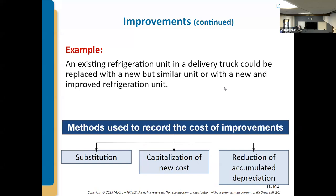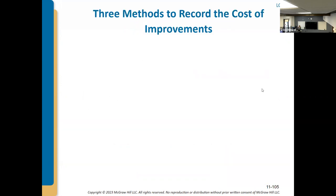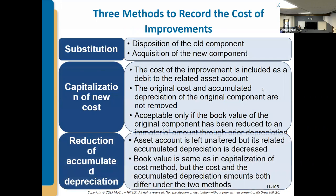When looking at the cost of improvements, you can use substitution — dispose of the old unit and capitalize the new one. If you're scrapping an old unit, you remove both the asset and accumulated depreciation off the books and recognize a loss if not fully depreciated. If selling, you could have either a gain or a loss. Capitalization of a new cost would be recording the new purchase directly. You could also use the reduction of accumulated depreciation method, leaving the asset on the books but showing it as fully depreciated if no longer in use.